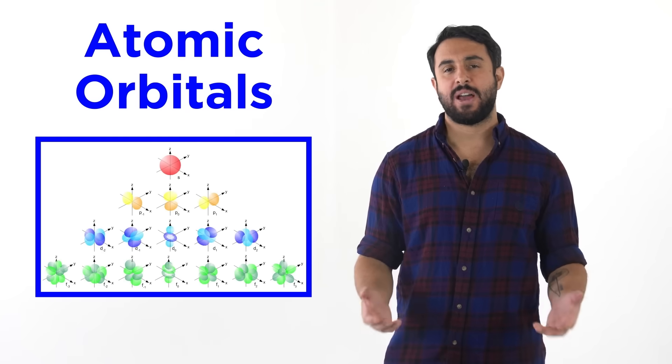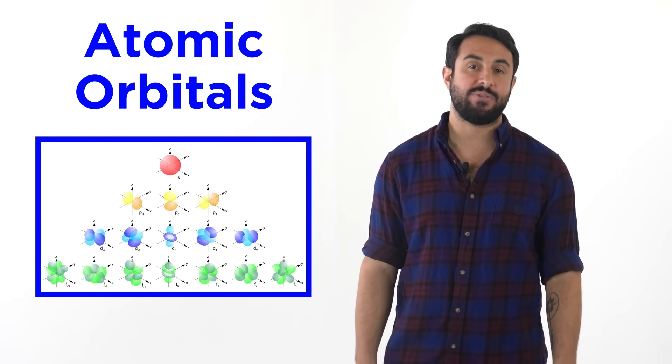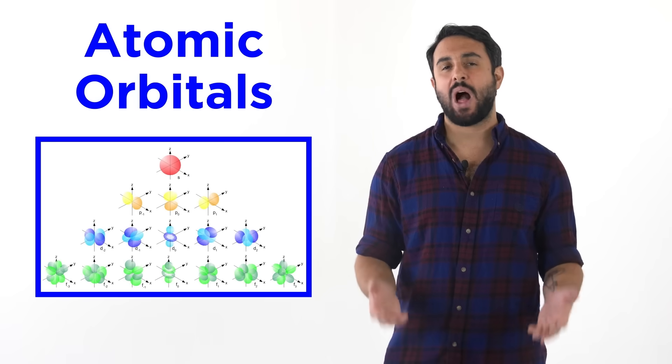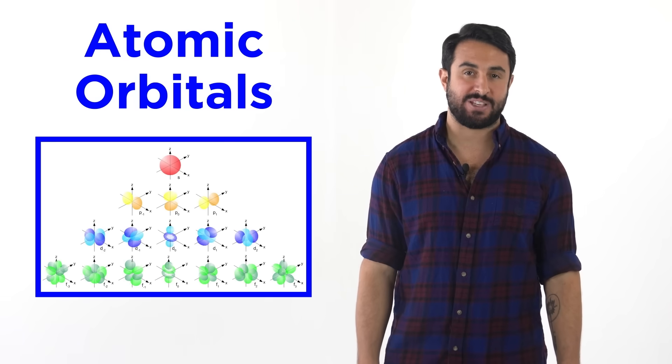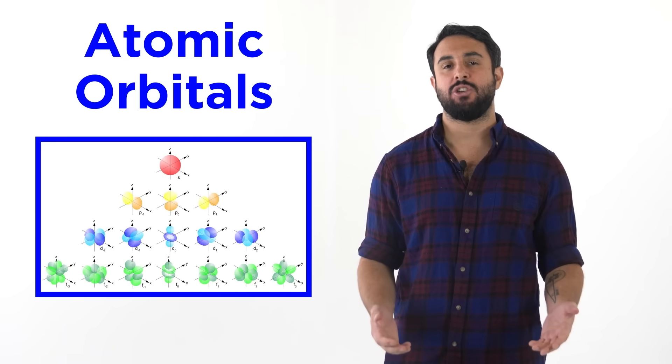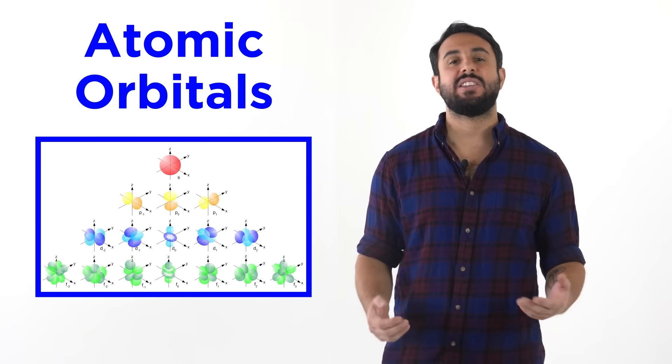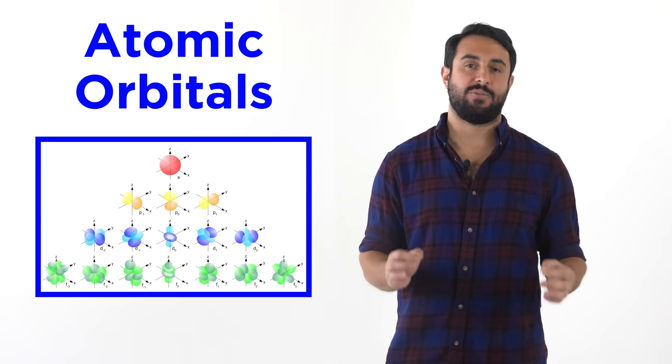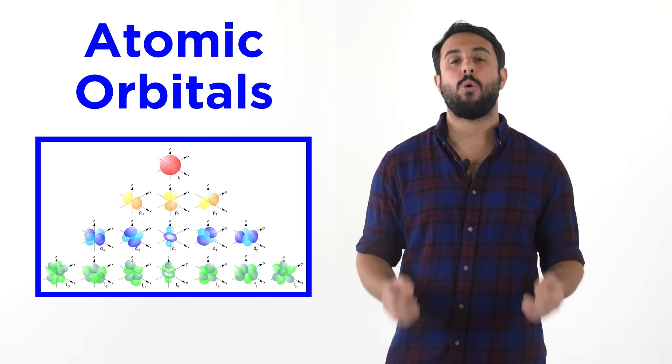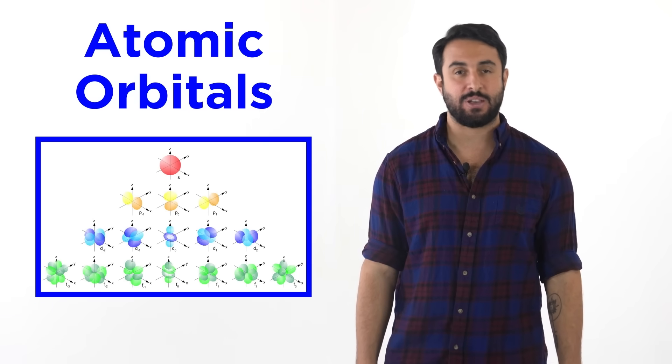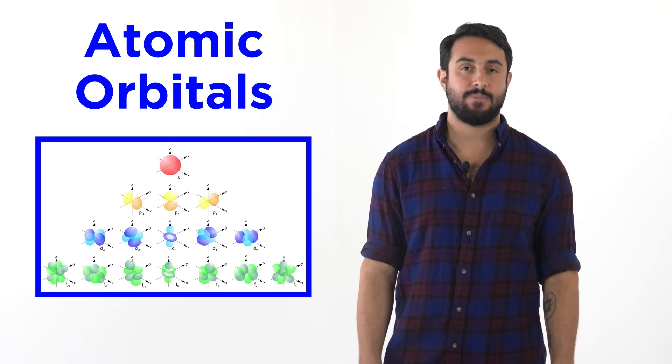We should now have a better understanding of the shapes and relative energies of the different kinds of atomic orbitals. We do not need to understand why the orbitals have these shapes. That would require a comprehension of very complex quantum mechanical calculations. We simply need to know what the shapes of the orbitals are, and the order in which they are filled, so that we can talk about electron configurations. Professor Dave for Chegg, see you next time!